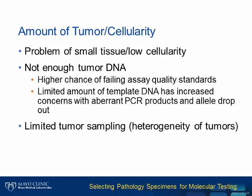What if there is not enough tissue or DNA? The problems with a small amount of tumor and low cellularity in a sample is that you may not get enough DNA for that test, which results in a higher chance of failing the test's quality metrics. Also, a limited amount of template DNA increases concerns when it comes to aberrant PCR products and allele dropout. Aside from problems with the PCR reaction itself, when you only have a small sample of cells, you have limited sampling of the tumor itself. And as we know, there is heterogeneity within tumors, so you are less likely to see the spectrum of alterations that are truly present.